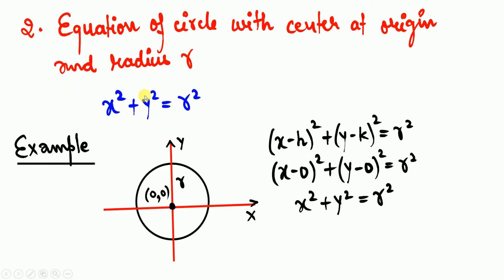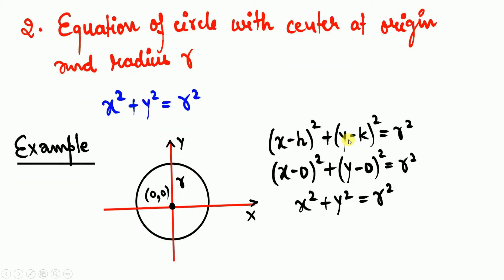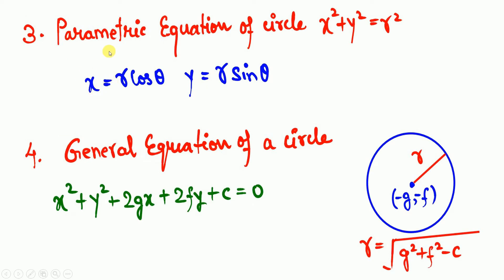The second format is the equation of a circle with the center at the origin and radius r. This is a special case of the first format. When the center is at the origin, h = 0 and k = 0. Substituting gives x² + y² = r². This is the equation of a circle with center at the origin and radius r.